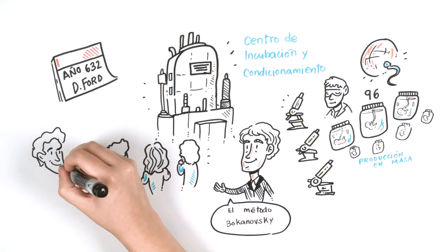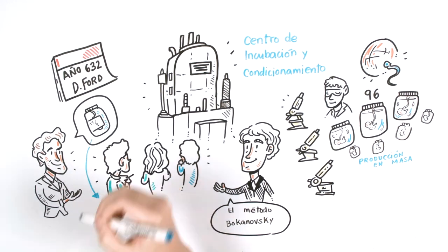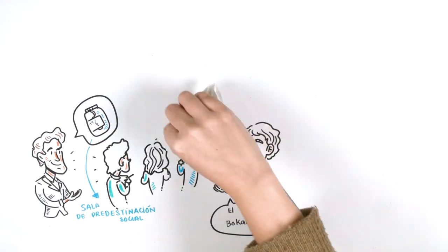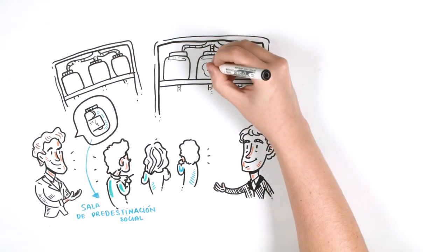The director addressed Henry Foster, a scientist in the packaging room, in charge of packing and labeling the embryos to send them to the social predestination room. In there, they focused on the quality of thousands of embryos in order to create socialized human beings with a specific future.